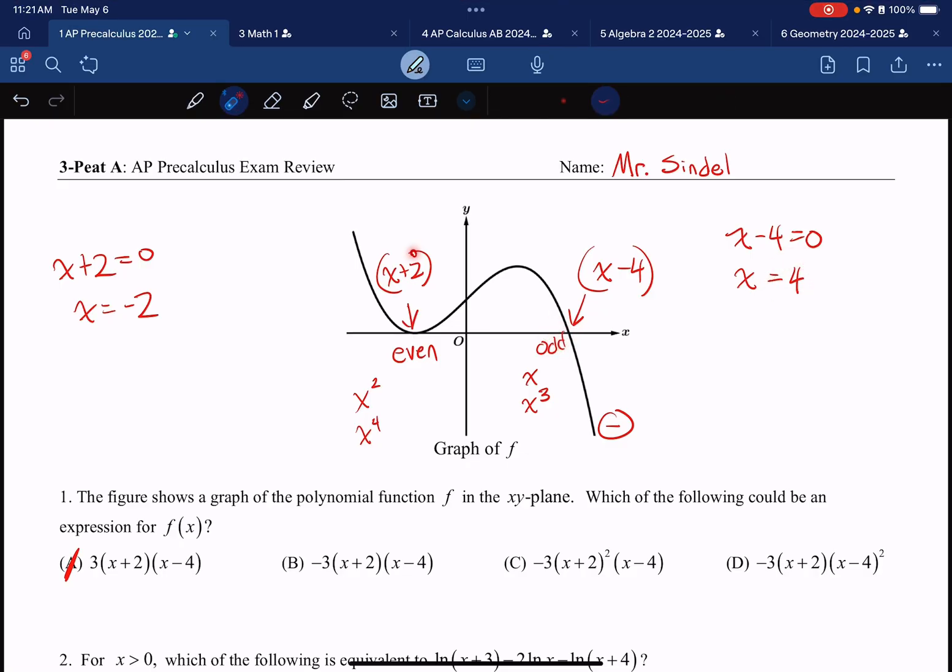So I know that this x plus 2 has an even power. This x plus 2 has an odd power because it has no power, and you assume the power is 1, which means B is eliminated. This x plus 2 does have an even power, therefore it's still in the running.